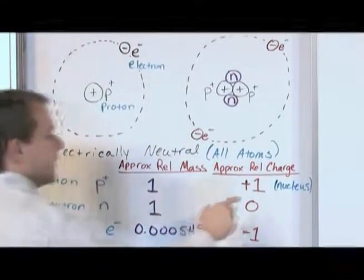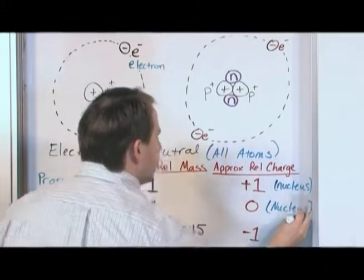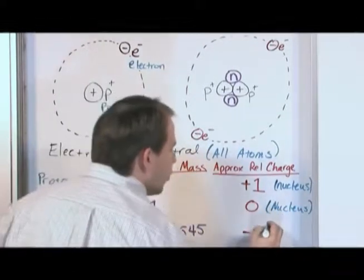The neutrons live in the nucleus. The electron lives in the orbit.